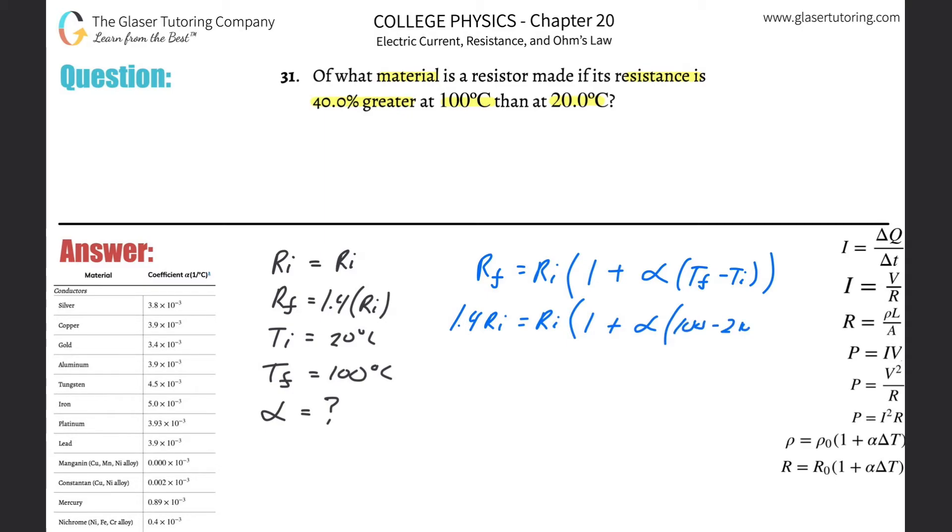Let's simplify this. So 1.4Ri = Ri(1 + 80α). Now I realize I've got two Ri's here, so what I'm going to do is divide both sides by Ri. It just cancels, right? Now I only have one unknown. You might initially look at this and say I've got two unknowns, I'm going to need another equation. That might be a good first thought; however, what I would do is first simplify it a little bit.